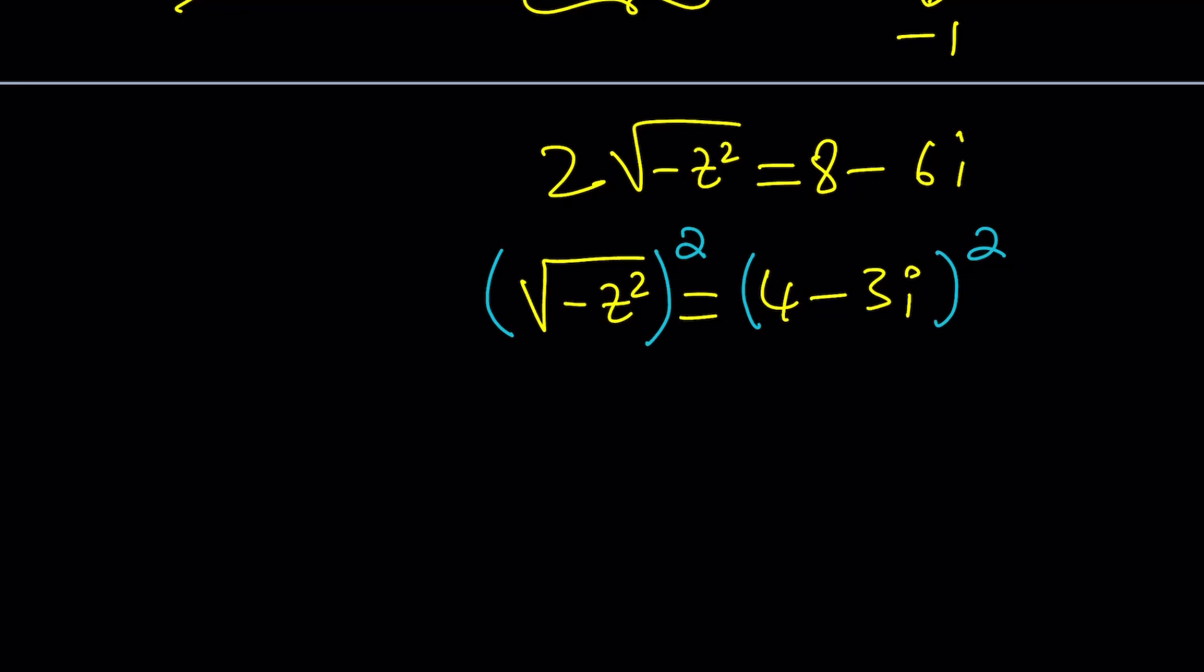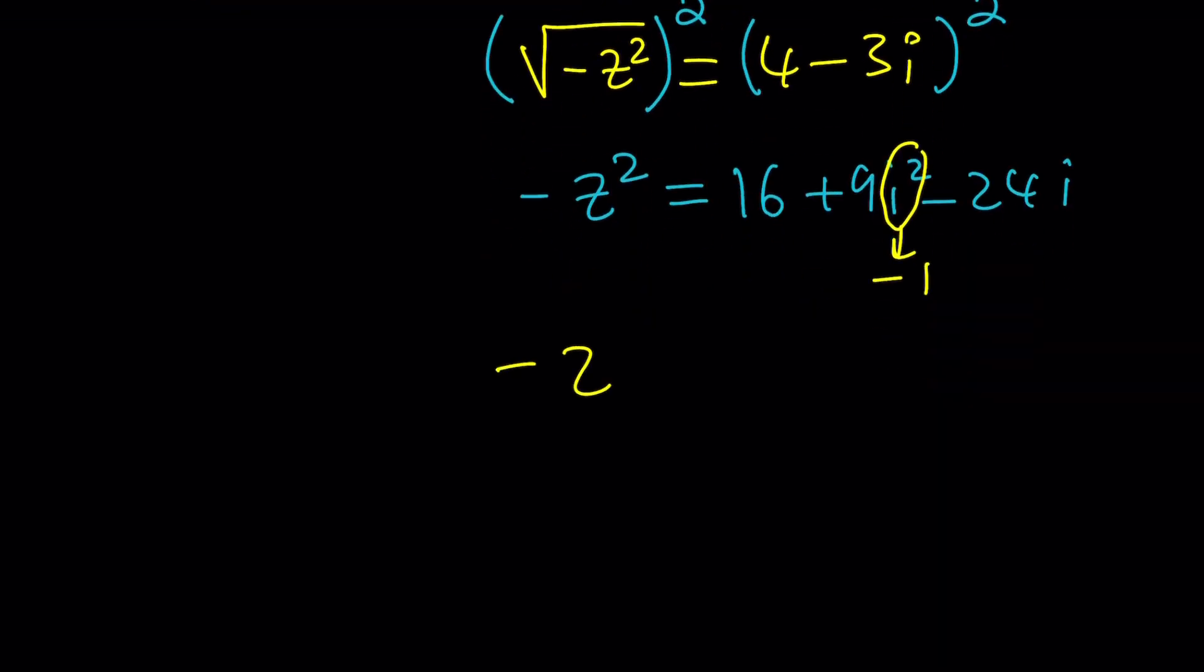When we square both sides, we're going to end up with negative z squared. The radical is going to disappear. And again, we're going to go through this a squared, b squared thingy. 16 plus 9i squared minus 24i. i squared is equal to negative 1.